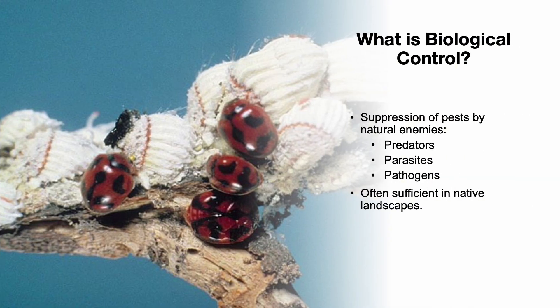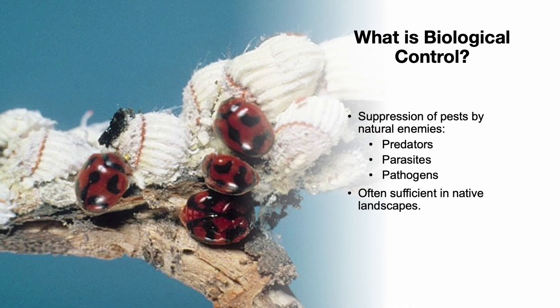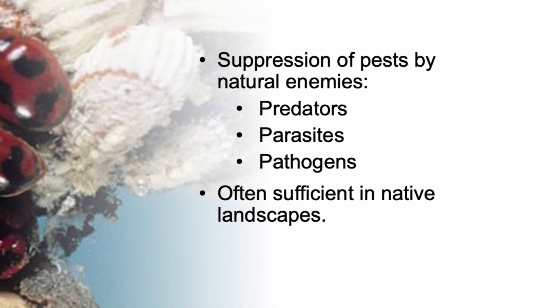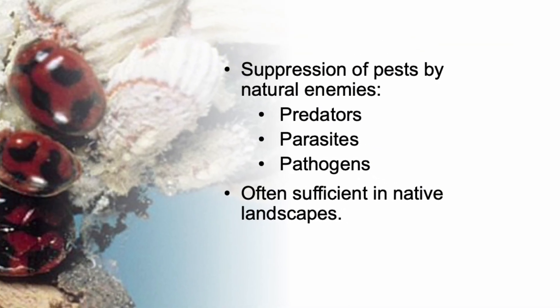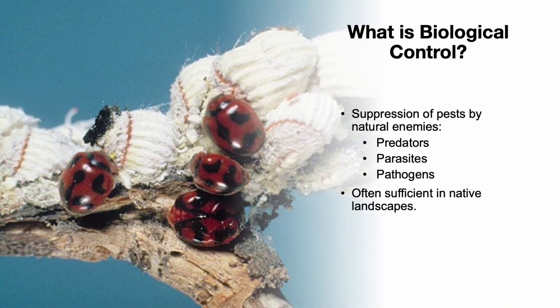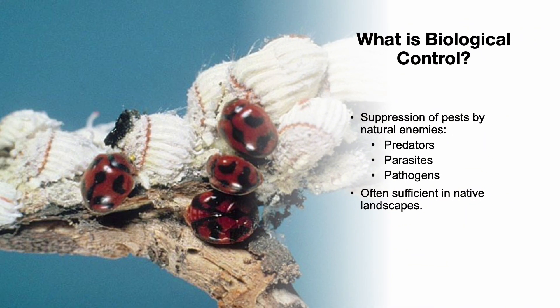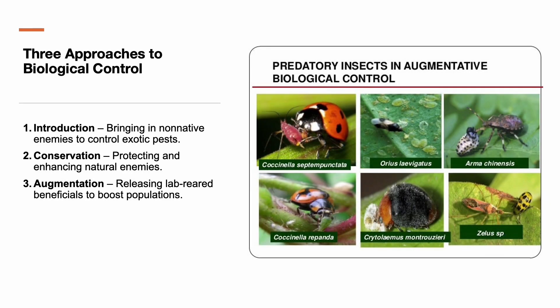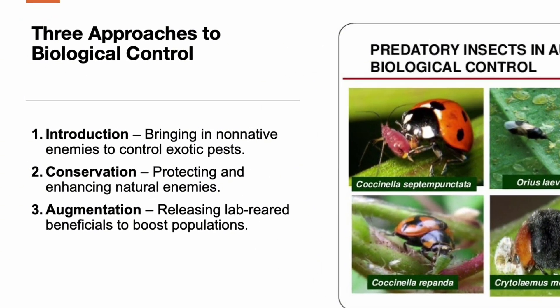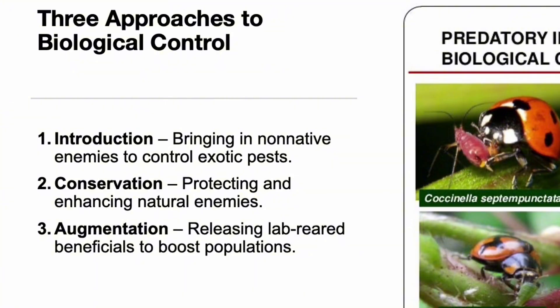Biological control is the use of natural enemies to suppress pest populations. These include predators, parasites, and pathogens. Many native pests already have these natural enemies, and in many cases they keep pest numbers low enough that no further intervention is needed. In urban landscapes, natural biological control may not always be enough. When pest populations exceed tolerable levels, applied biological control may be a viable alternative, especially where pesticides are undesirable — like near playgrounds, patios, or water features.